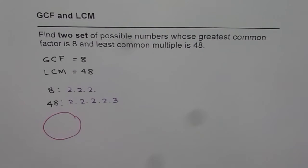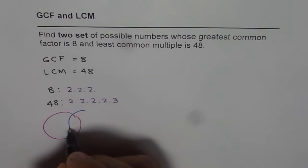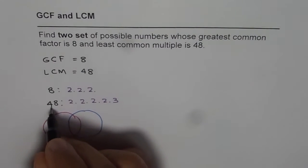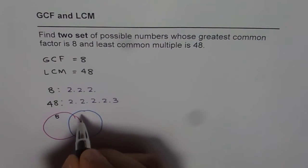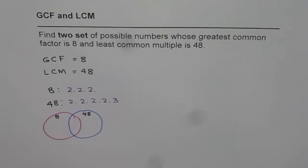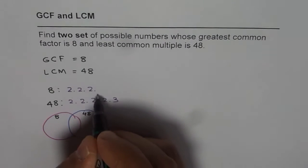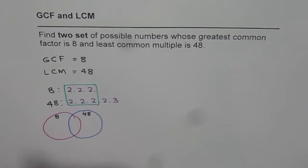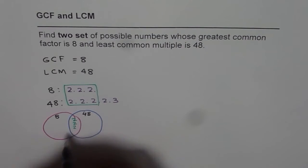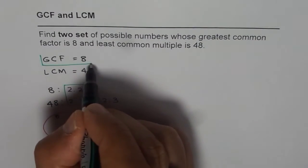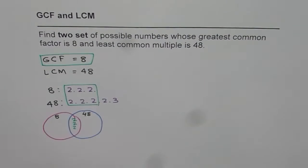So what we have here is two circles representing the factors of our numbers 8 and 48. So let us say this circle is for 8 and this one is for 48. In these two circles we can place the common group in the intersection. So that is 2, 2, 2 — which makes 8, and this is the greatest common factor between these two numbers.